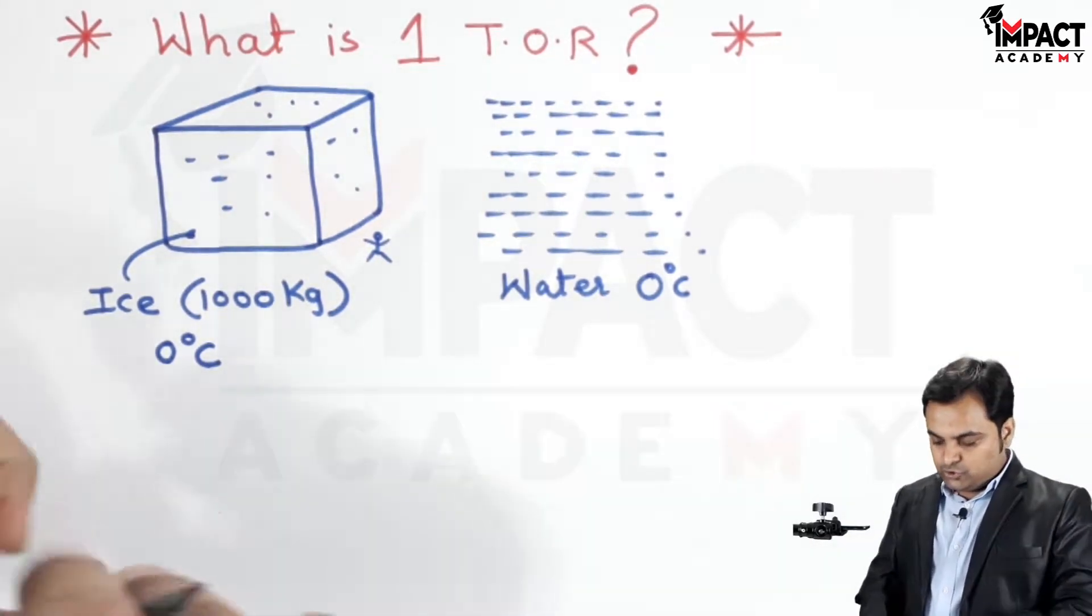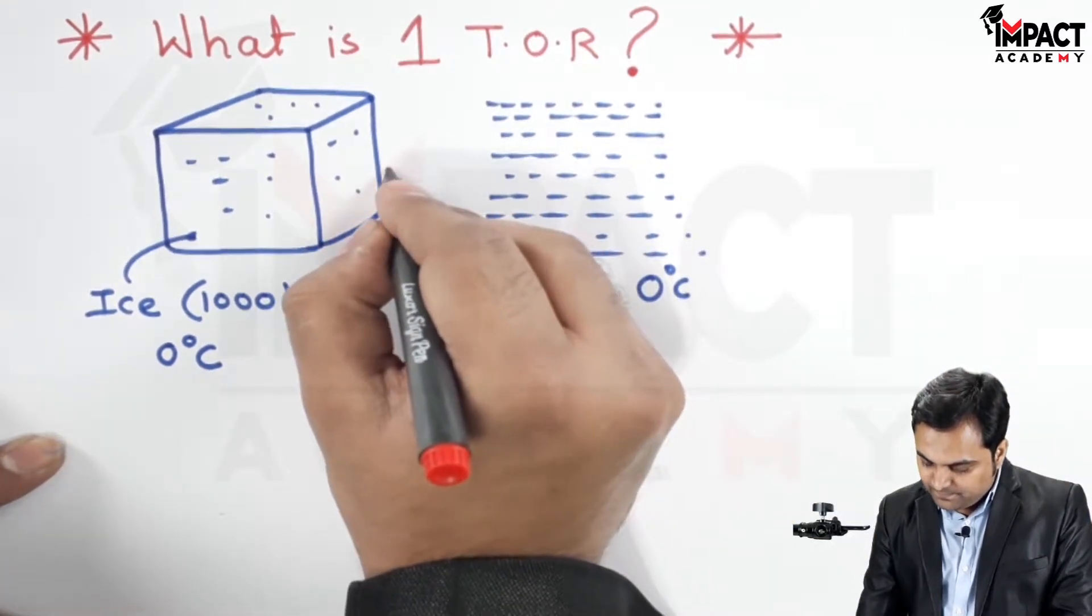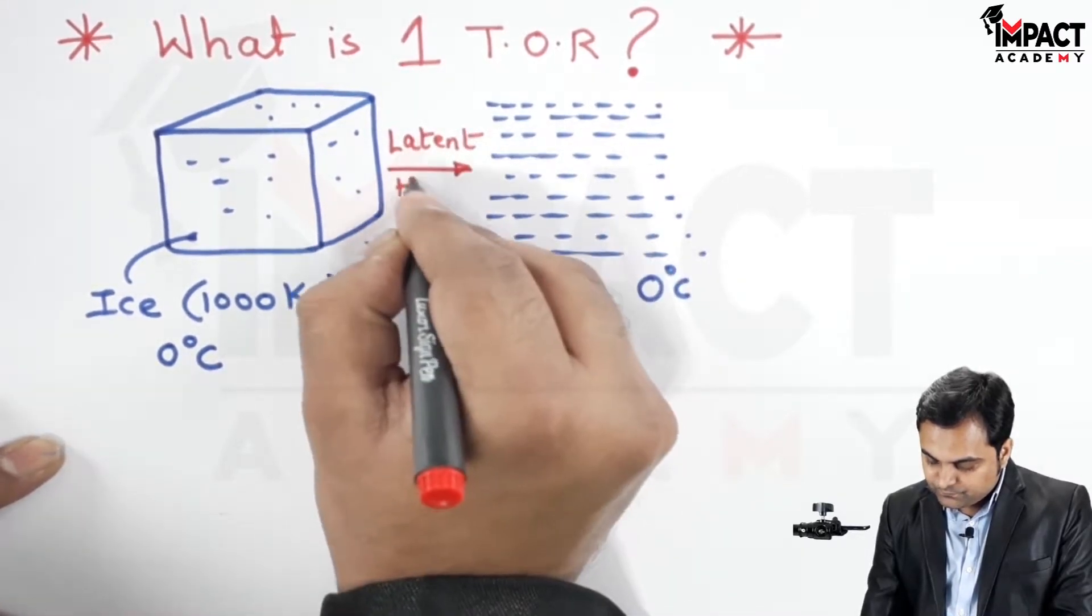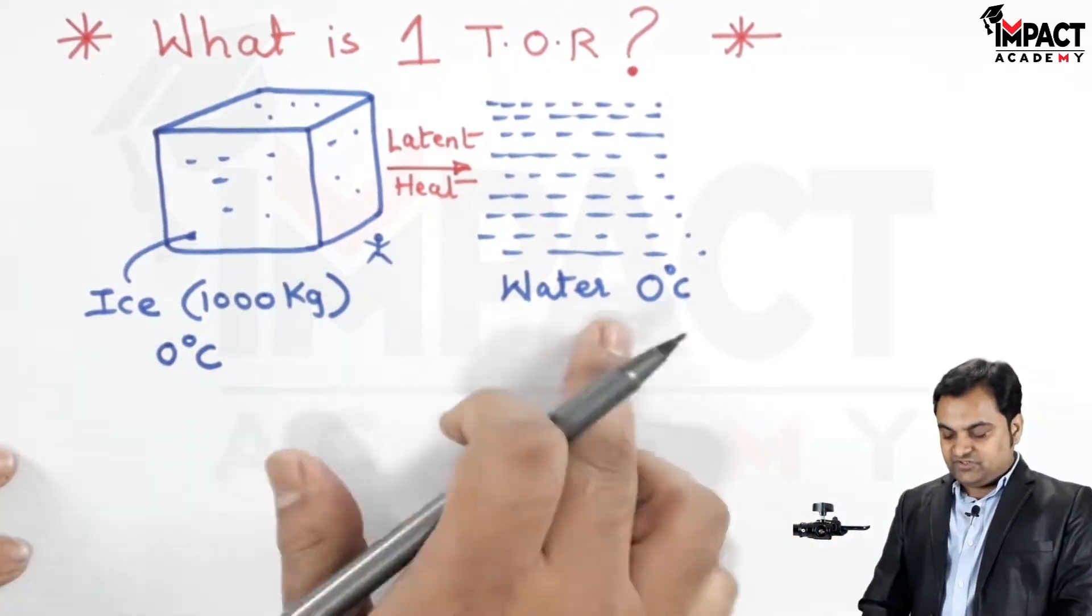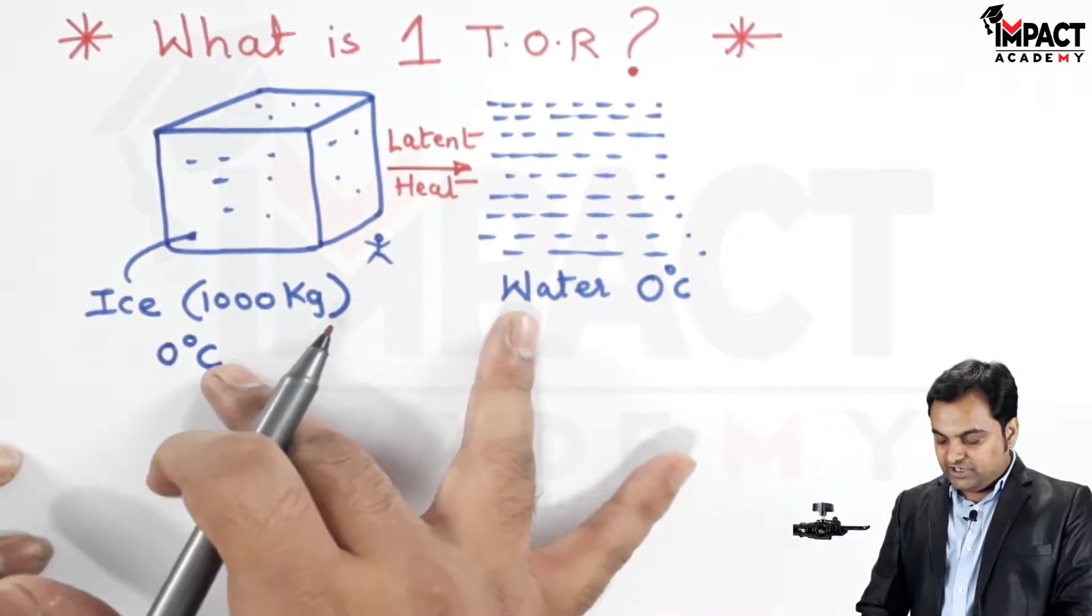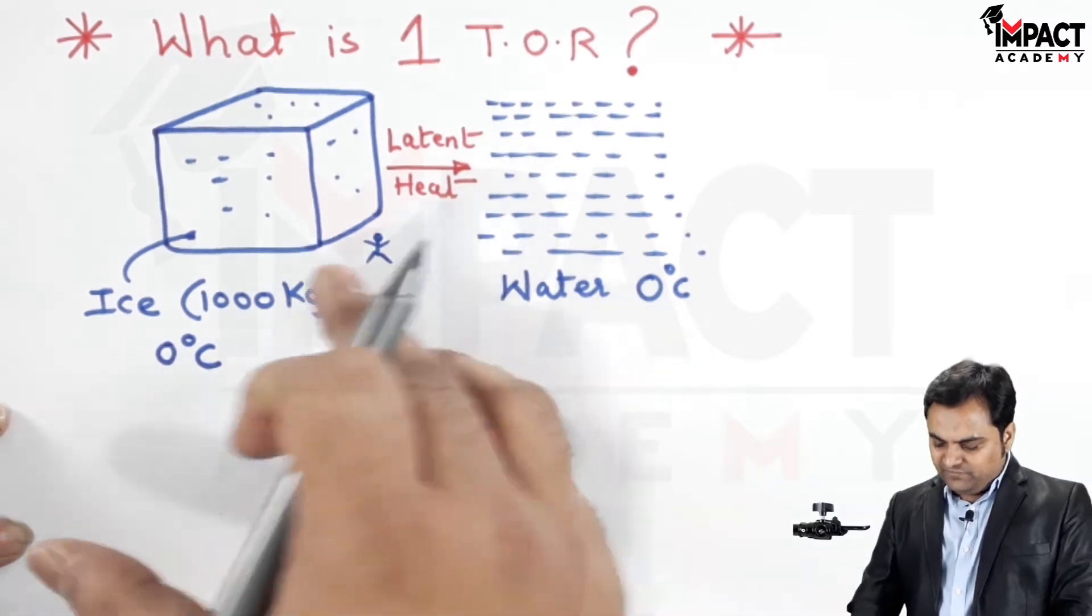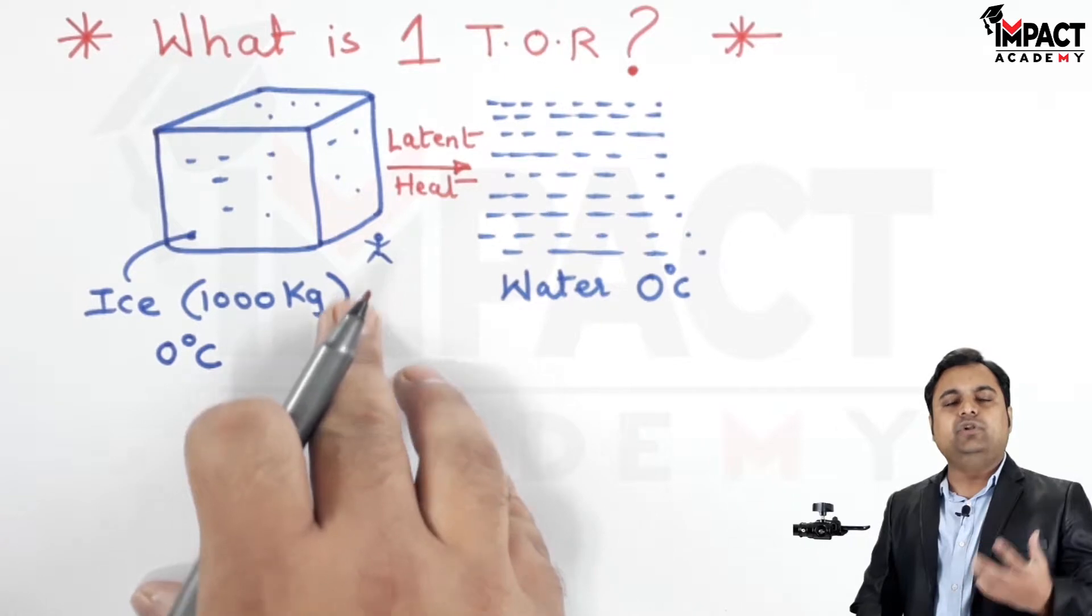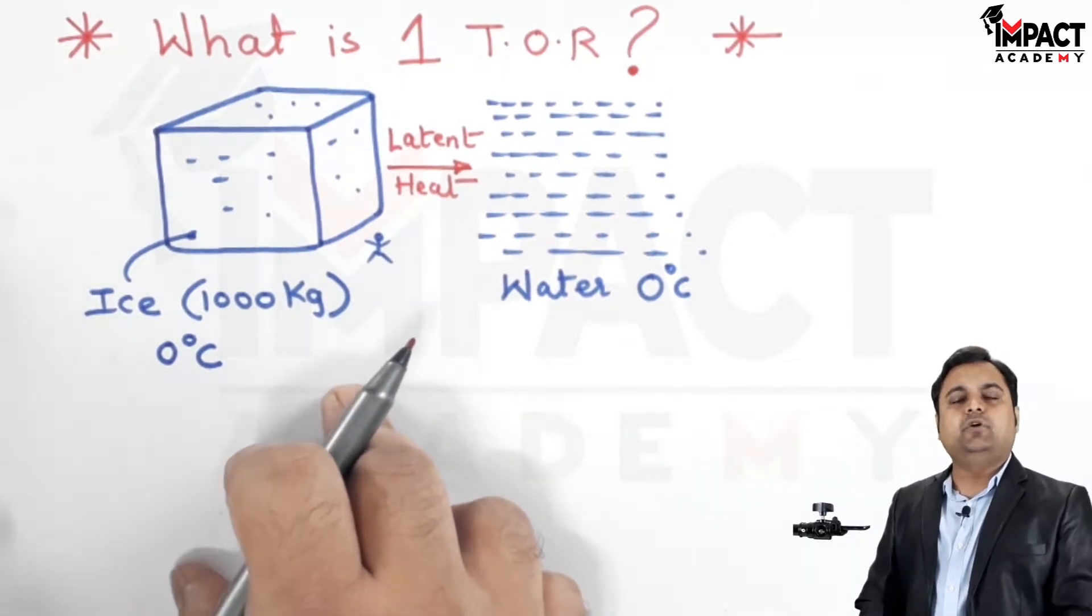The heat which is given up by the ice is called latent heat, wherein there is change of phase from solid to liquid but no change in temperature. When we are standing near this ice, whatever refrigeration effect or cooling effect we are feeling for 24 hours, that would be called one ton of refrigeration.